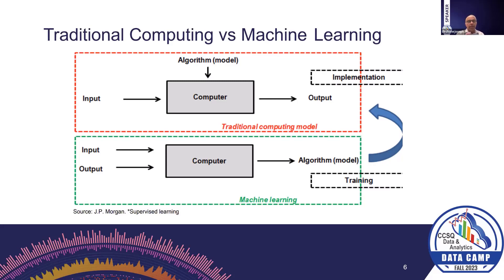The diagram at the top depicts the traditional computing model, where you have an input to the computer, an algorithm you write in your favorite language, and then outcomes and output. In the machine learning model, we have input and output going into the computer, and through a training process, the output is an algorithm or model. Data is the key, and the output is a model we can use to predict something based on new data.